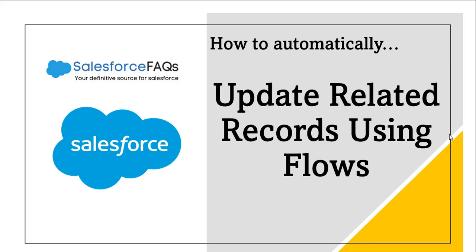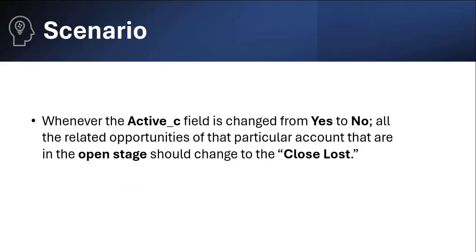To better understand, let's take a scenario. Whenever the Active field — which is a custom field I created on the Account object — is changed from Yes to No, all the related opportunities of that particular account that are in an open stage should be changed to Closed Lost.